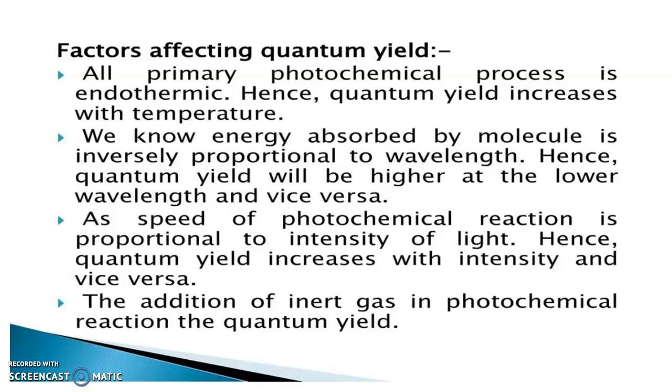Then further, we will discuss actually what are the factors that are affecting the quantum yield. See the first point. All primary photochemical process is actually an endothermic process. We know that if the temperature of the system increases, the quantum yield also increases. If the temperature of the system decreases, the quantum yield decreases.